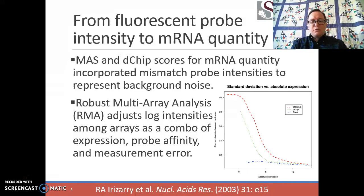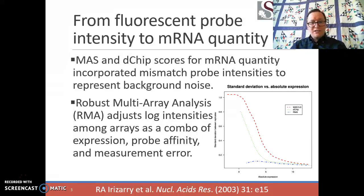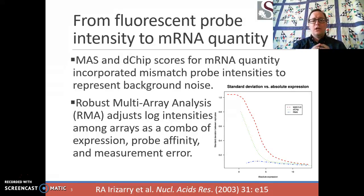The folks who created the RMA approach realized that MAS and dChip were actually hurting themselves by including any information at all from these mismatch probe sequences. As a result, the RMA approach was proven to be much more resistant to background annealing. The robust multi-array analysis adjusts the log intensities among multiple arrays as a combination of the expression — the data itself — probe affinity, since some probes produce a higher characteristic signal than others, and a measurement error term. By combining these three factors across many arrays, RMA produced more reliable values, especially at very low intensities.